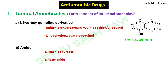Moving to the next category called as amide group containing drugs. Amides are nothing but a carbonyl group attached to a nitrogen atom. Diloxanide furoate and nitazoxanide are amide group containing drugs having luminal amoebicidal action. Next, some of the antibiotics such as tetracycline group of drugs and paromomycin, which is an aminoglycoside antibiotic, also belong to luminal amoebicides.